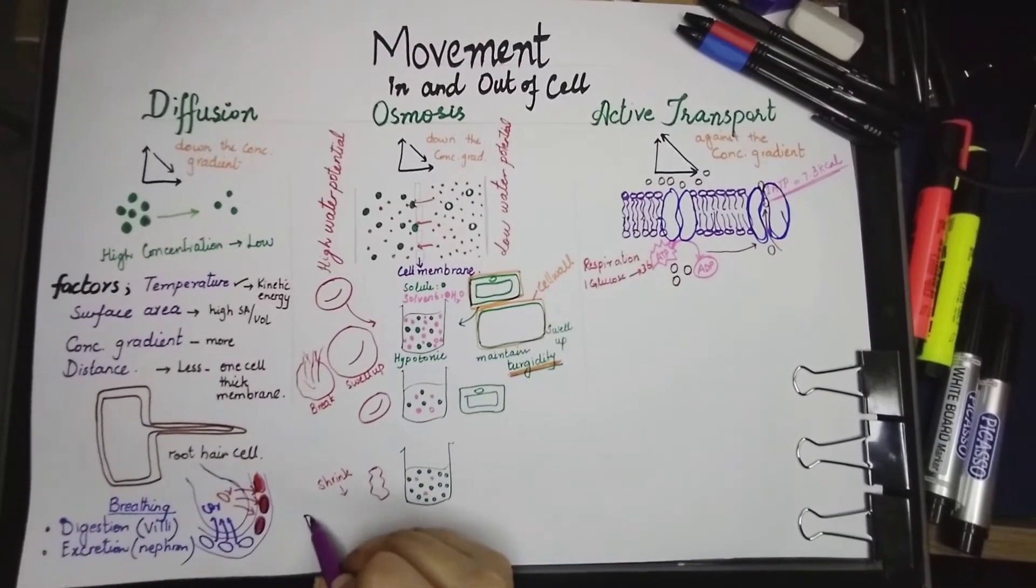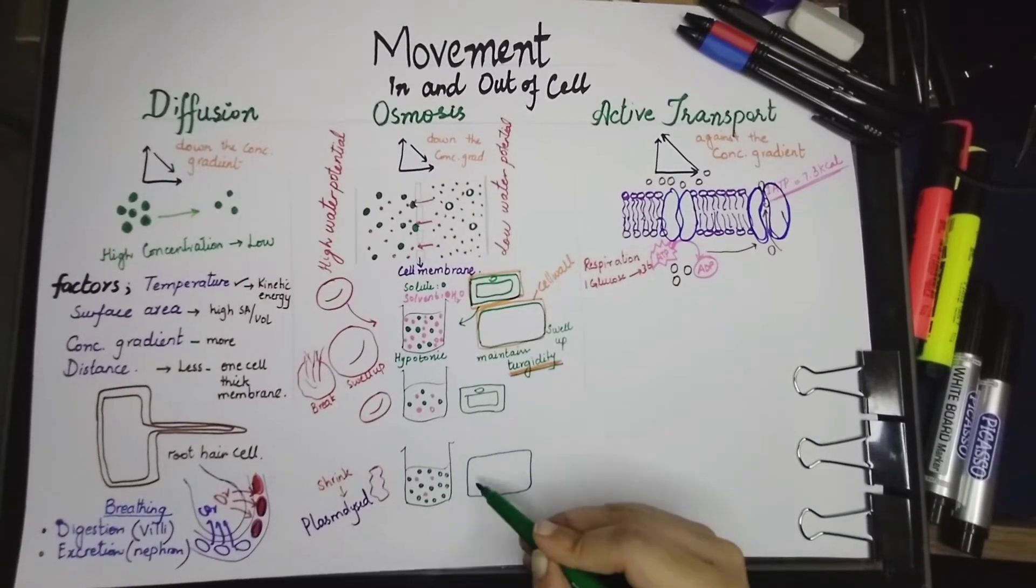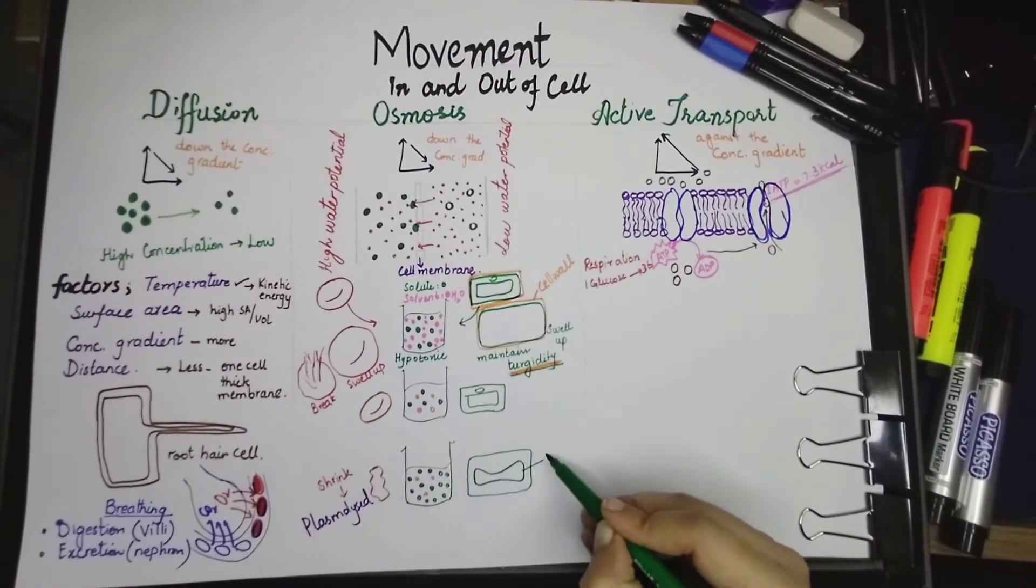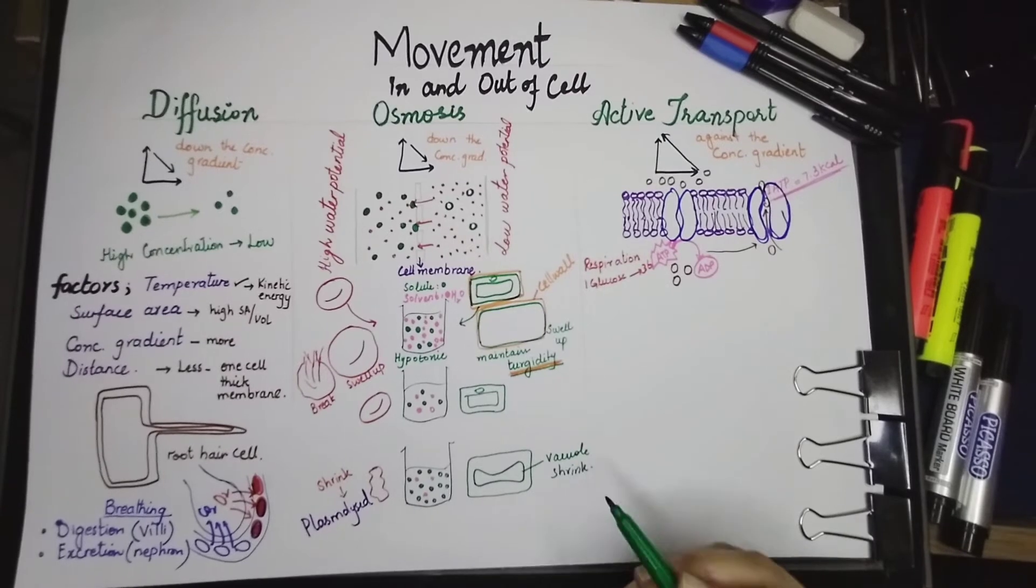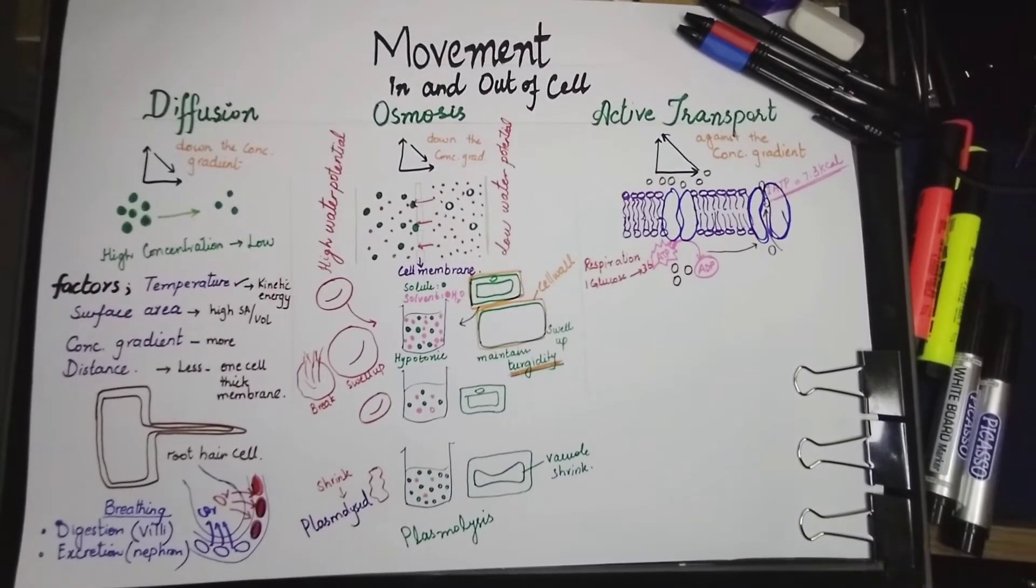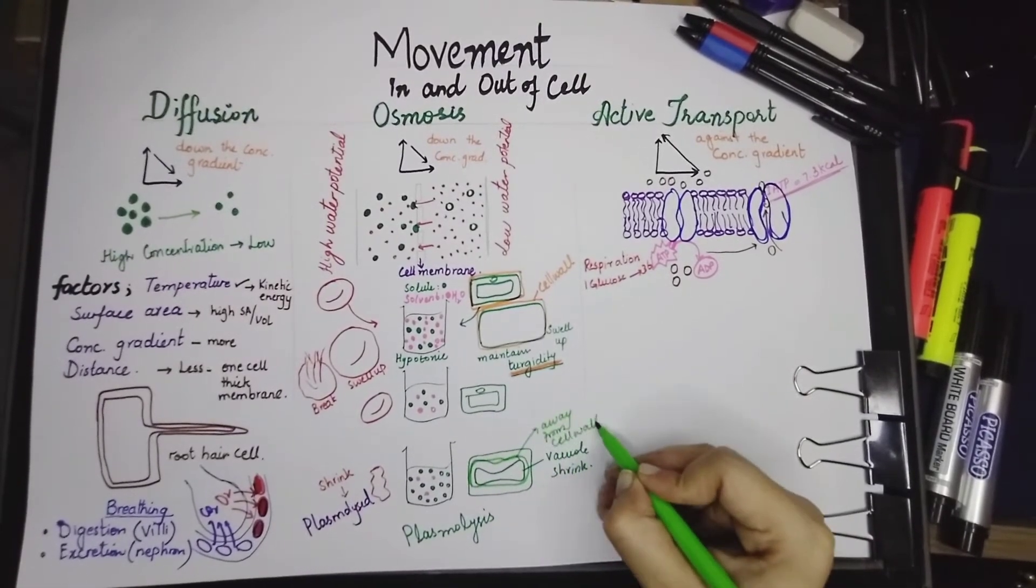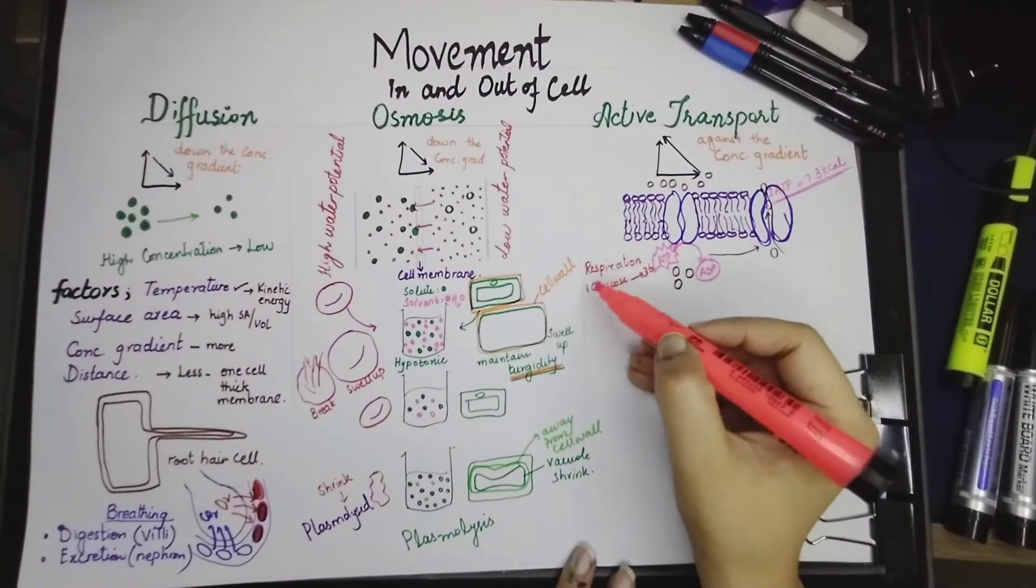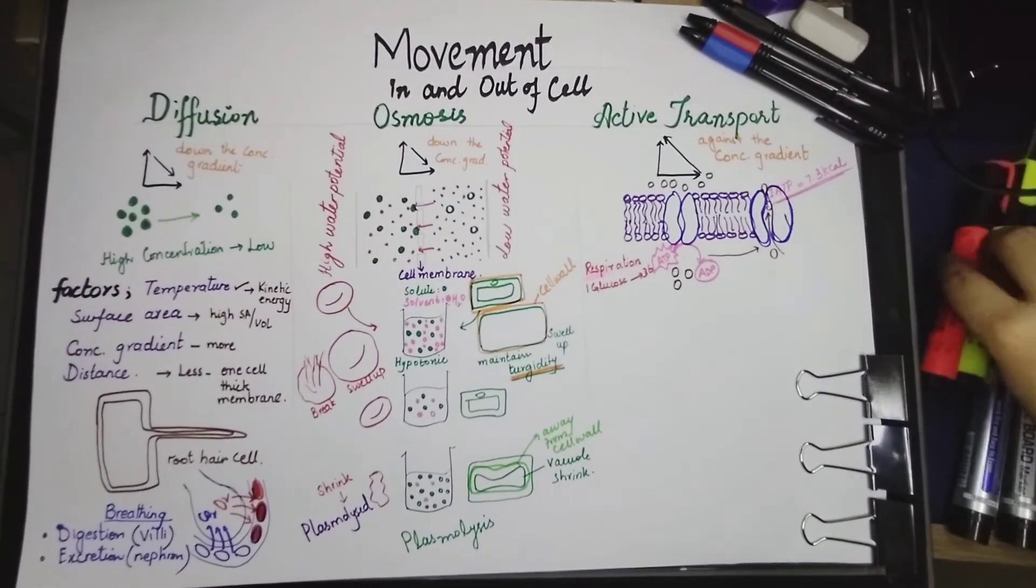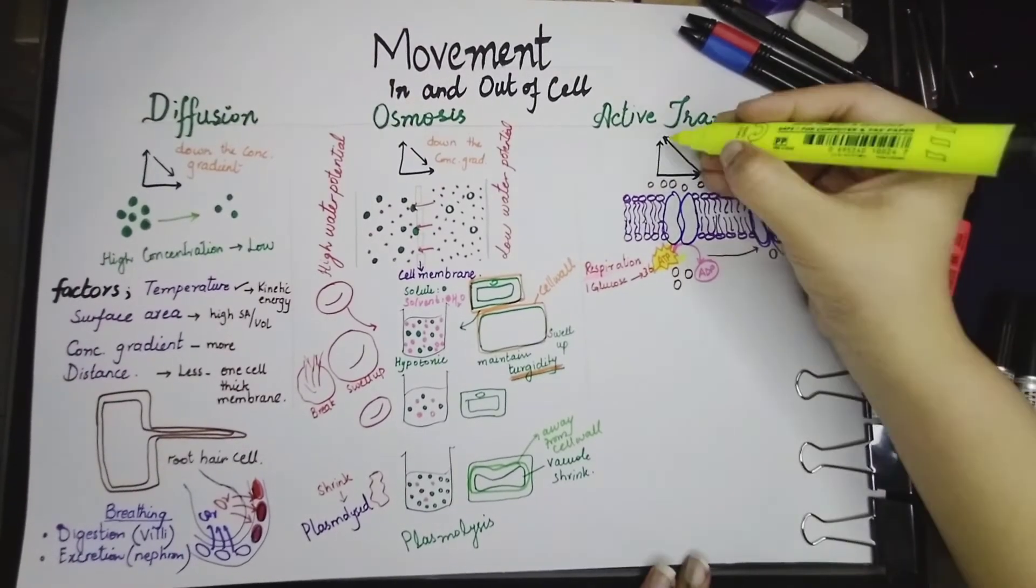Whereas in the second one, you can see there is no change. We call it an isotonic solution. In the third one, we can see that the cell has shrunk. Both the plant and the animal cell, they both have shrunk which is called plasmolysis in which water leaves the cell and the cytoplasm shrinks away from the cell. So the shrinkage of cytoplasm and the cell membrane away from the cell wall, this whole process is again called plasmolysis.